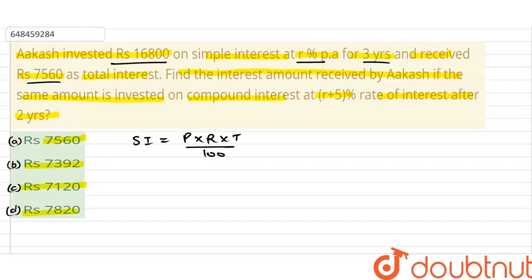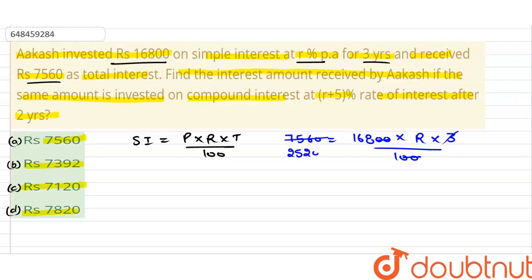Principal कितना given है? Principal — sorry, interest कितना given है? 7,560. Principal is 16,800, rate of interest हमें निकालना है, और time कितना है? 3 years, divided by 100. 20 से 20 cancel होगी. 3 से cancel करेंगे तो 3, 2, 6 — 3, 5, 15 — 3, 2, 6, 0. तो यहाँ पे हम R की value लिख सकते हैं.